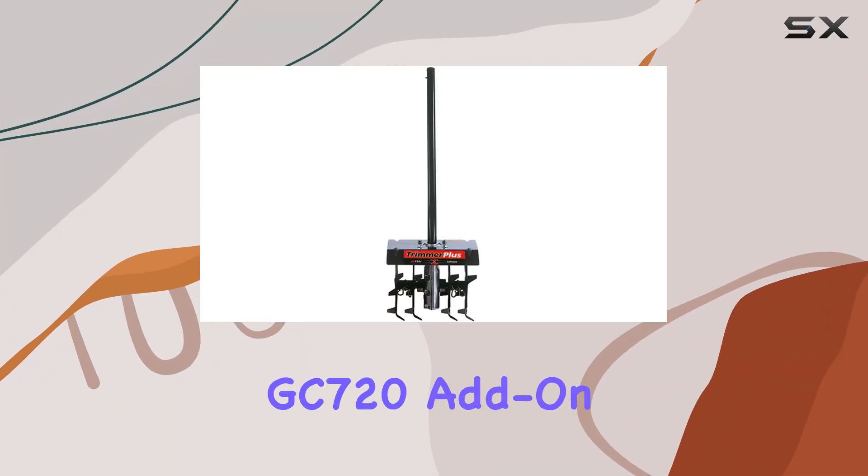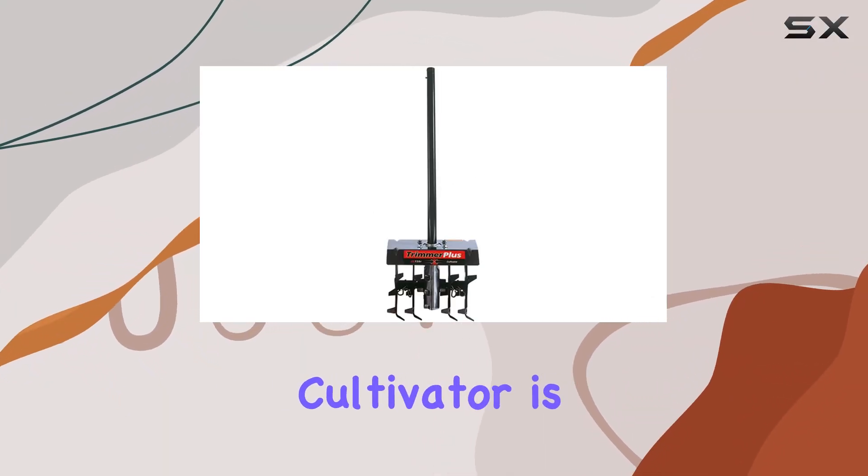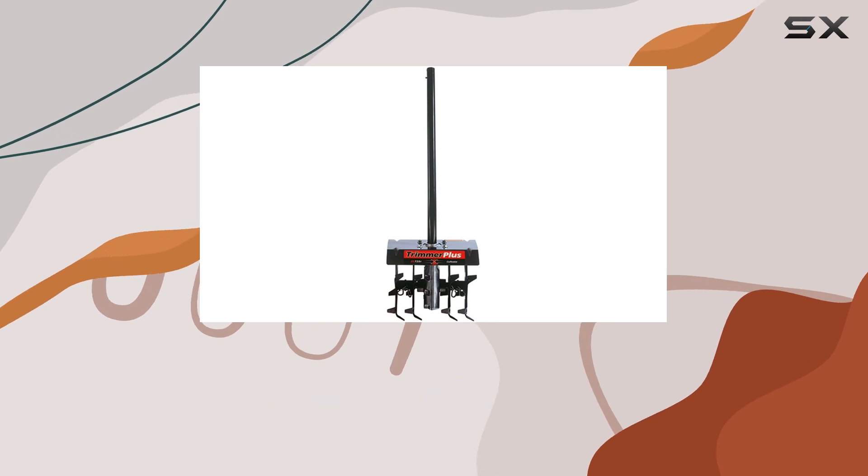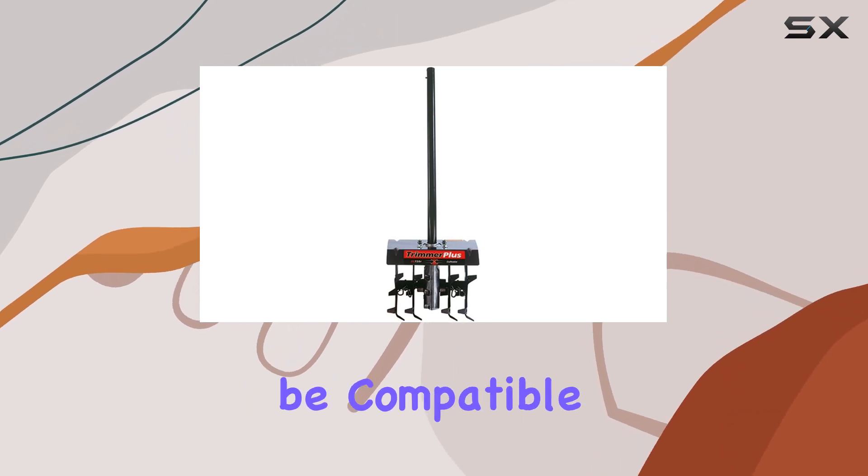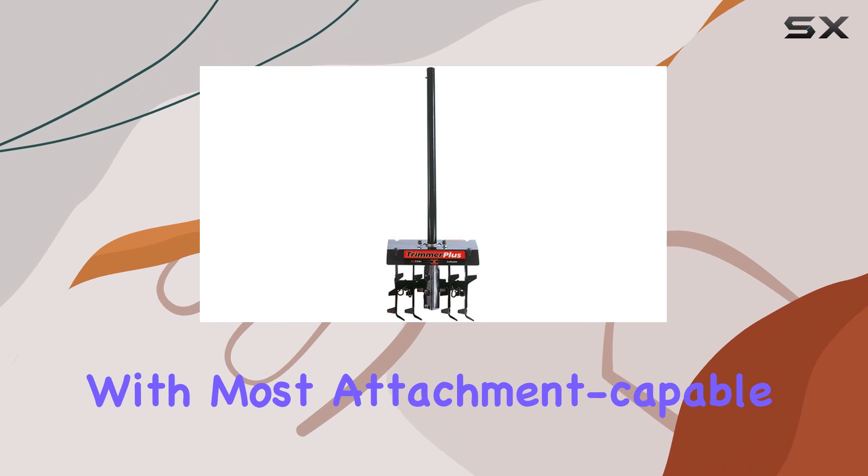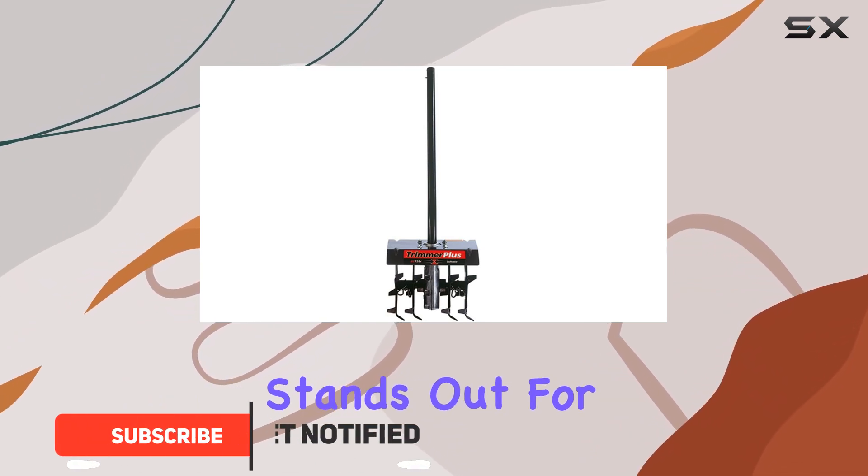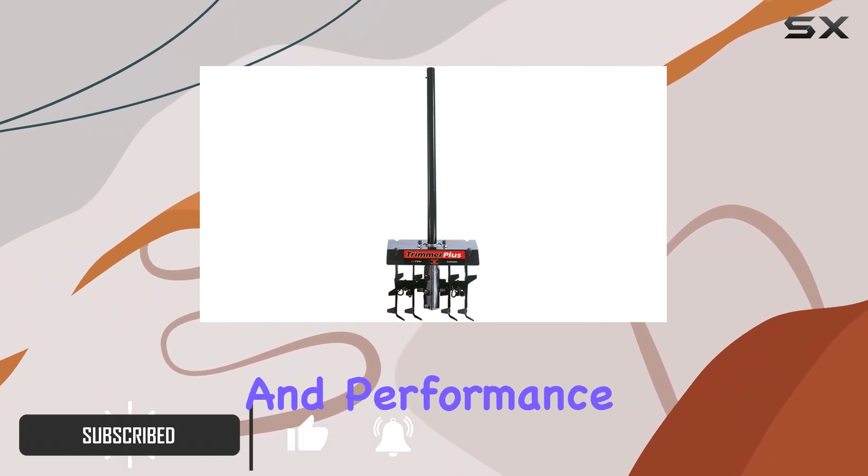The Trimmer Plus GC720 Add-On Cultivator is a powerful addition to any home gardener's toolkit. Designed to be compatible with most attachment-capable units, this cultivator stands out for its durability and performance.